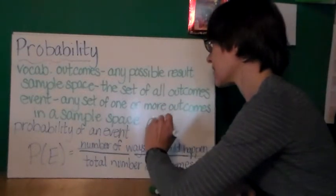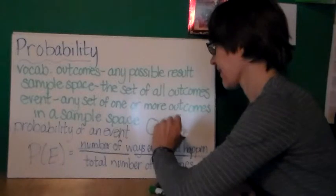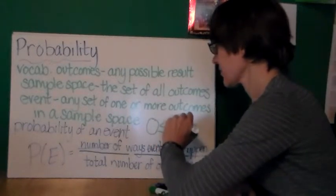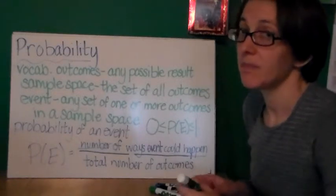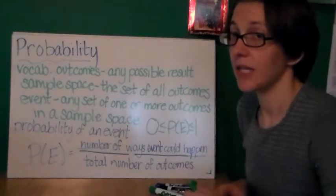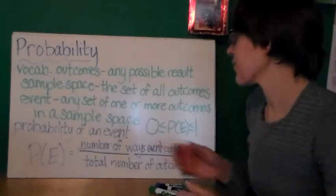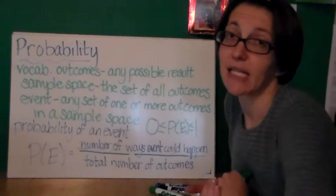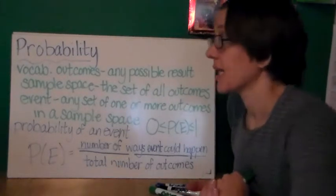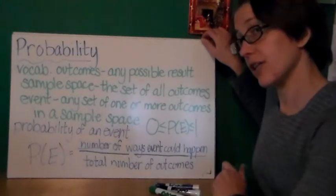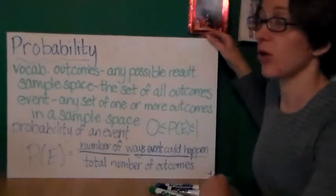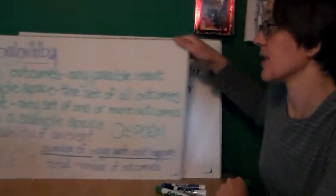P(E), we consider the number of ways that an event could happen divided by the total number of outcomes. And for every single event, the probability of that event happening is between zero and one. If we're expressing that as a percent, it's between zero percent and 100 percent.